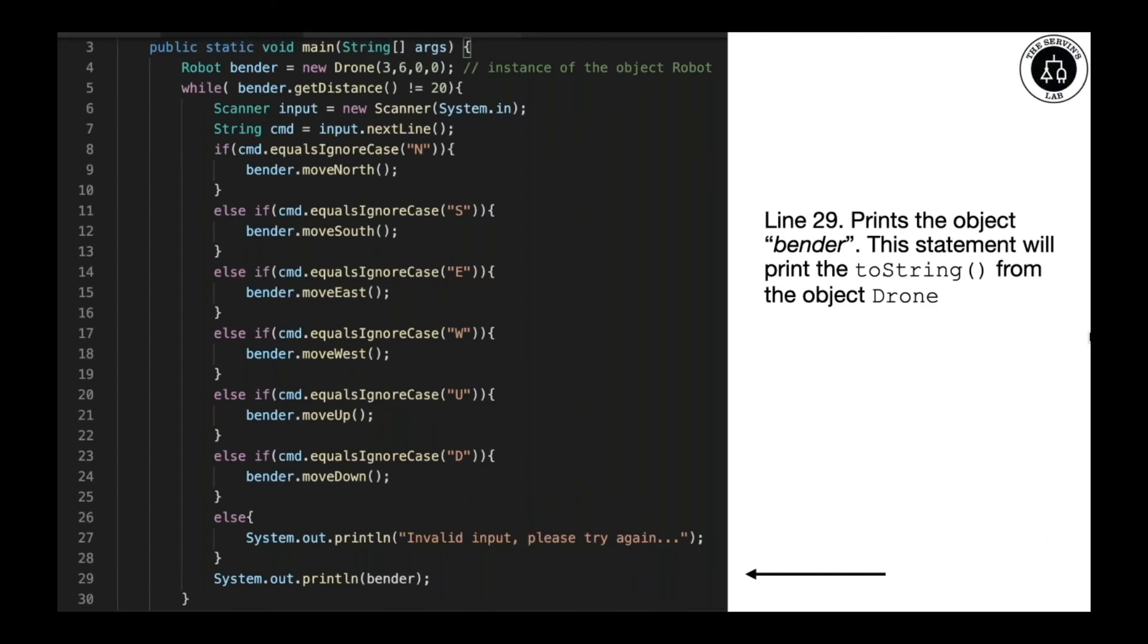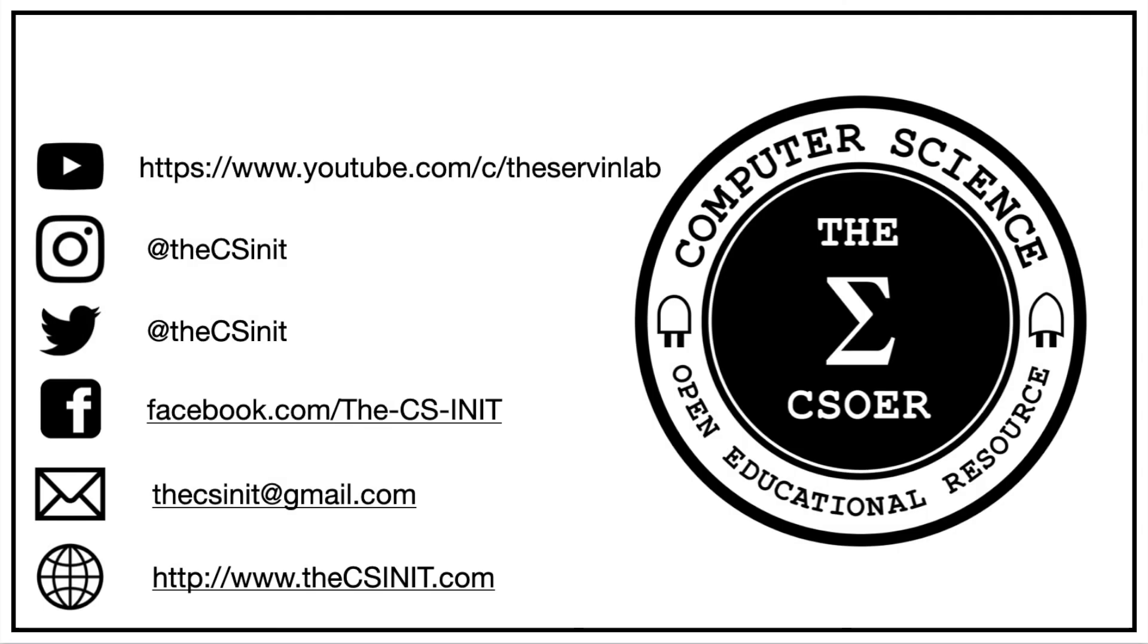On line 29, it will print the current state of the drone. Notice that the toString is not included, but that will include the entire description. And this is one of the perks that we got once we inherit the toString.